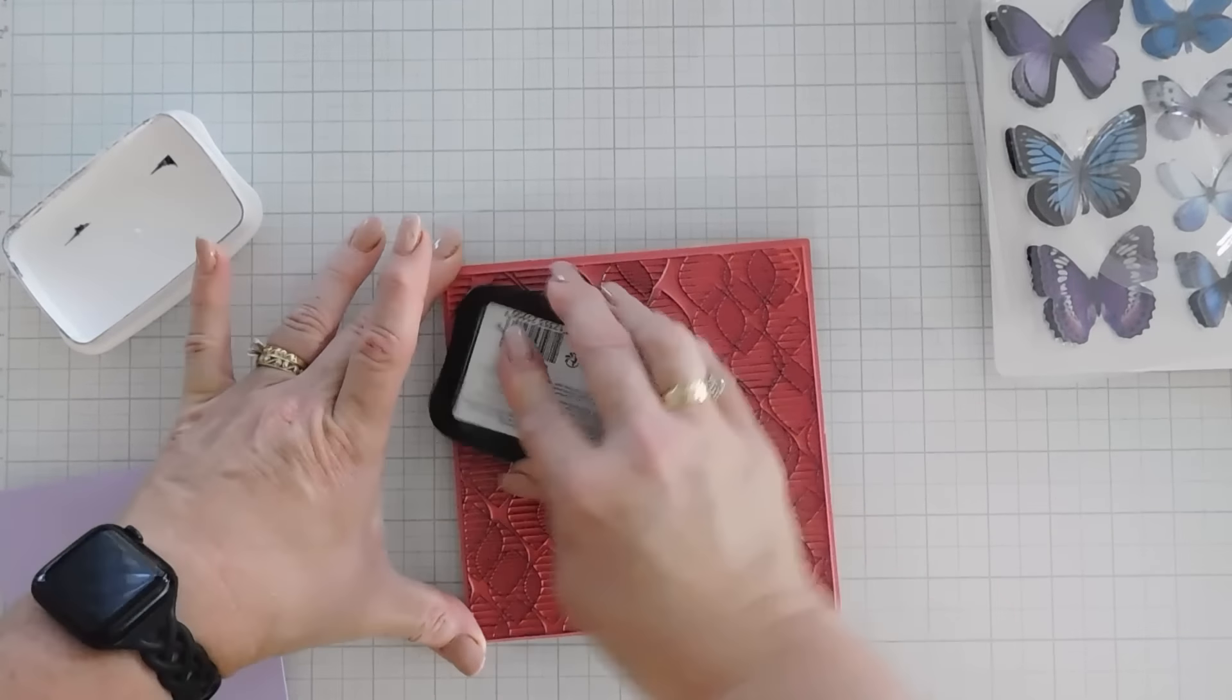I've been using a lot of background stamps lately, and I just love the effect. Sometimes I go on an embossing folder craze or a stencil craze. This month, I've been doing a lot of background stamping. Okay, we'll put this on here. I'm going to grab my brayer and I'm going to press down.